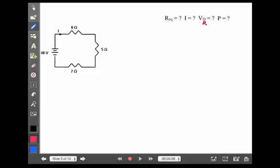So, let's take one more example. I've got a 40 volt source, and it's hooked to an 8 ohm, 5 ohm, and 7 ohm resistor. And I want to know what's the equivalent resistance of the circuit, the current flowing through the circuit, how much voltage drop each resistor uses, and the last question I'm going to ask is about power.